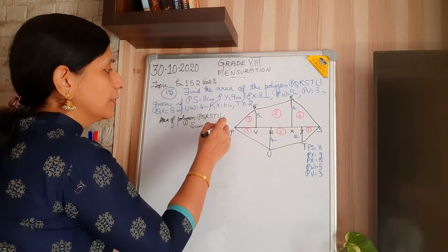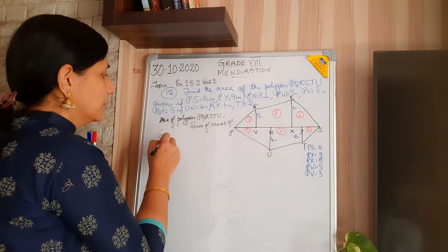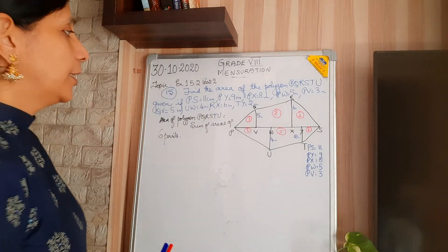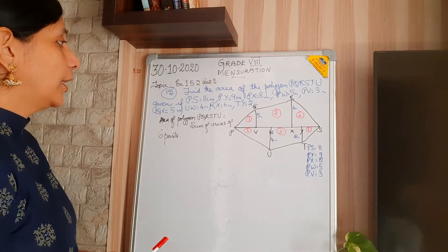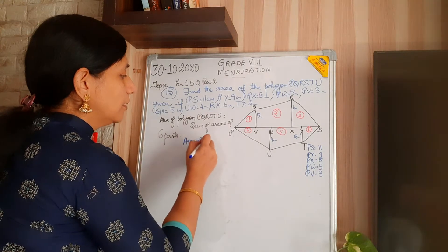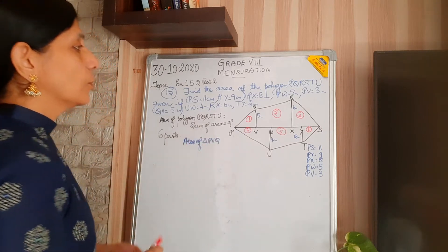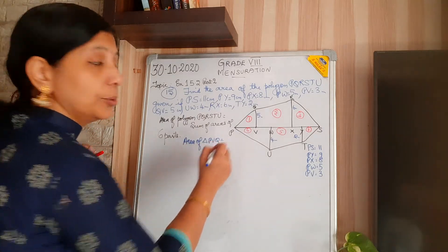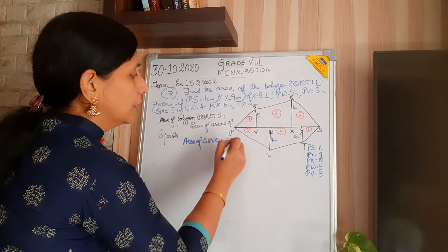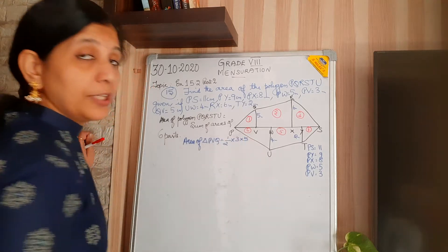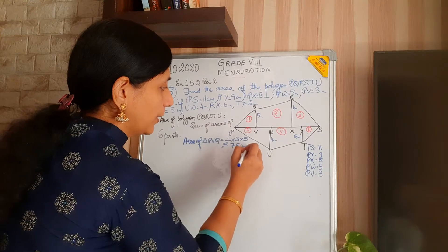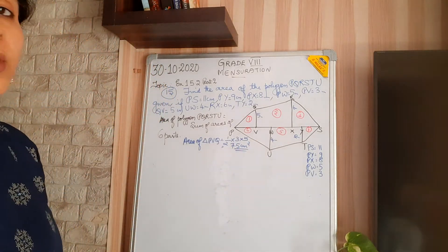Area of the polygon PQRSTU equals the sum of areas of 6 parts. The first part is a triangle: area of triangle PVQ equals half × base × height. PV is 3, so half × 3 × 5 = 7.5 centimetres square.